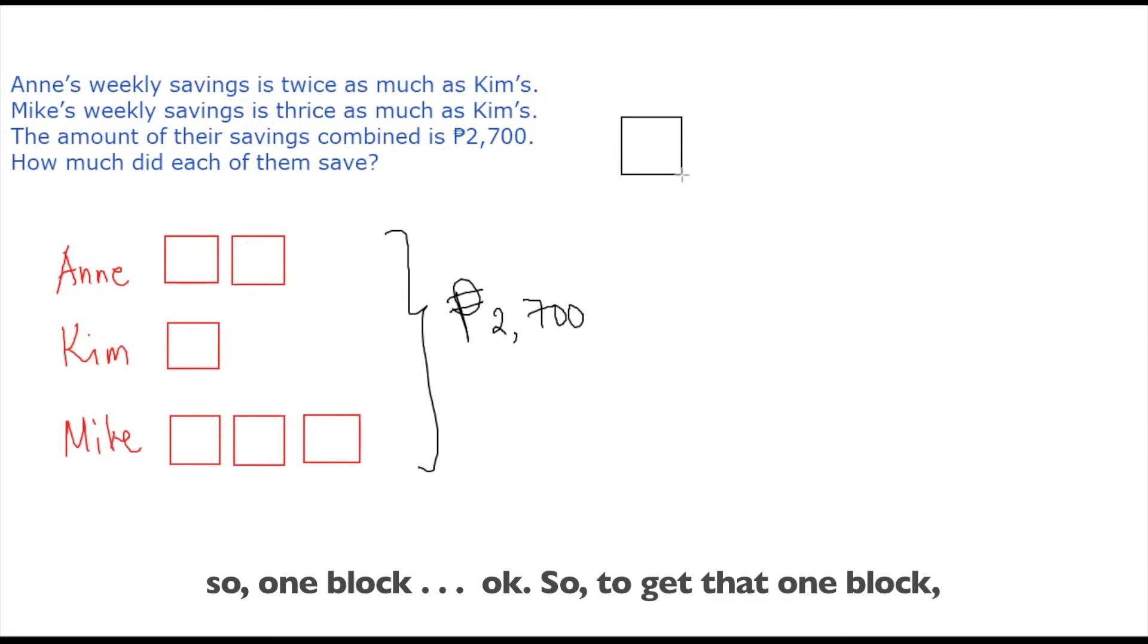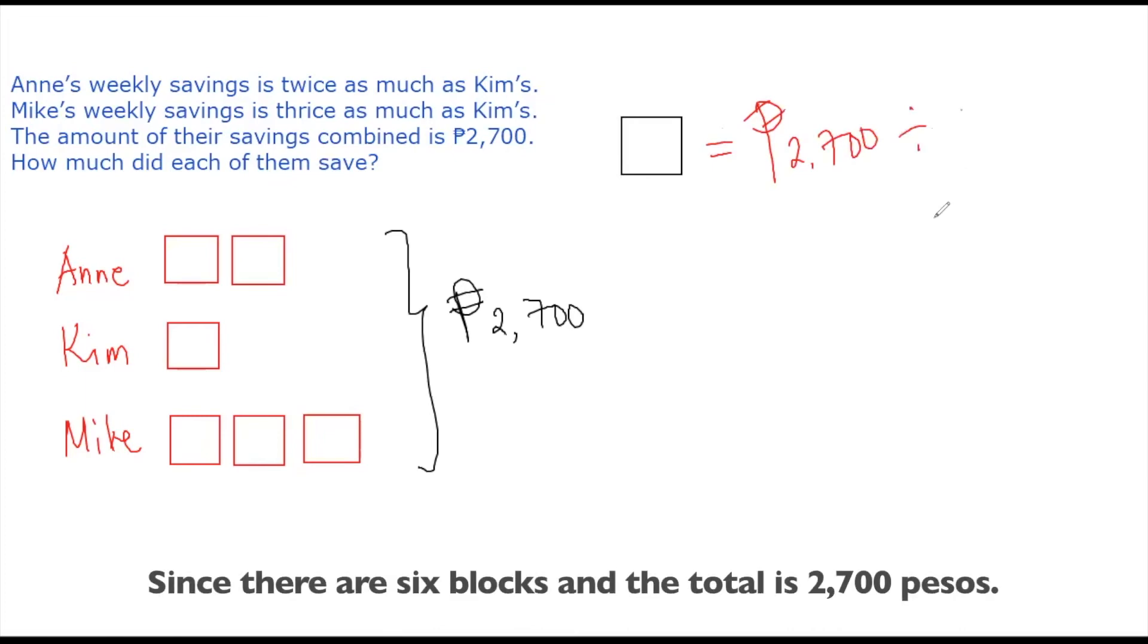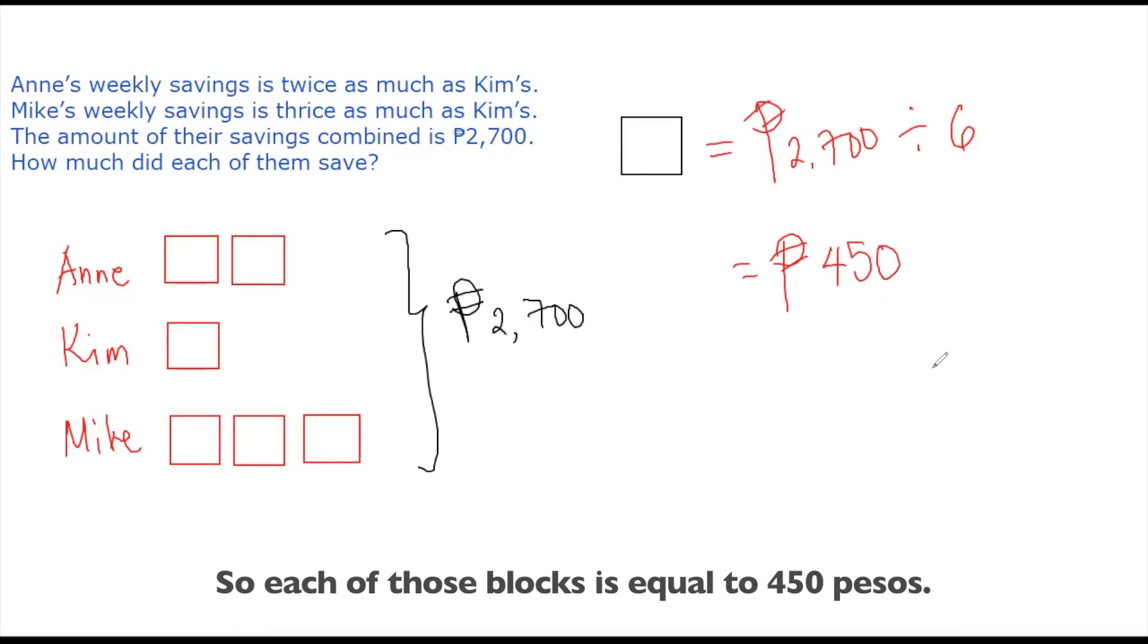So one block. Okay, so to get that one block, we'll have to divide 2,700 into six. Since there are six blocks and the total is 2,700 pesos. And then dividing this will have the result that is 450 pesos. So each of those blocks is equal to 450 pesos.